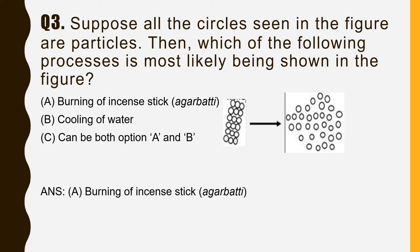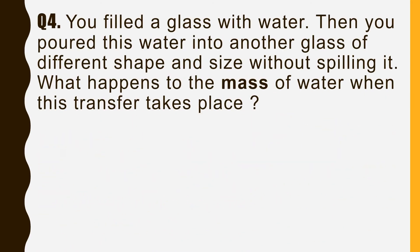In the picture, the particles are initially in a very compact arrangement, but after that the particles have spaces between them — intermolecular spaces. This is because with an increase in temperature, particles gain kinetic energy and start moving more rapidly, vibrating more, and moving farther apart. So the spaces between particles increase, which represents burning, not cooling.